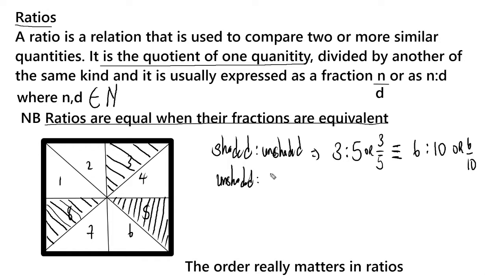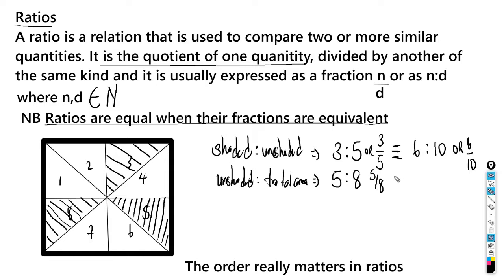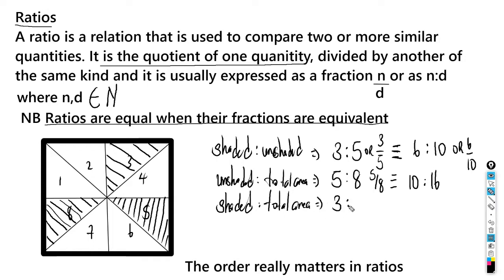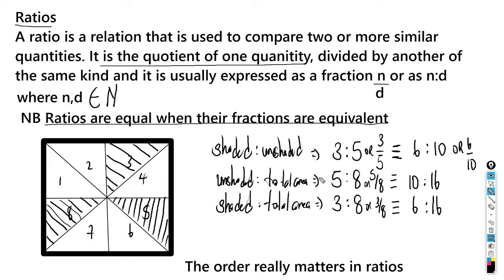Let's look at unshaded to total area. There are five unshaded regions out of eight total, so the ratio is five to eight, represented as five over eight. An equivalent ratio is ten to sixteen. Another example: shaded to total area is three to eight, or three over eight, which is equivalent to six to sixteen.